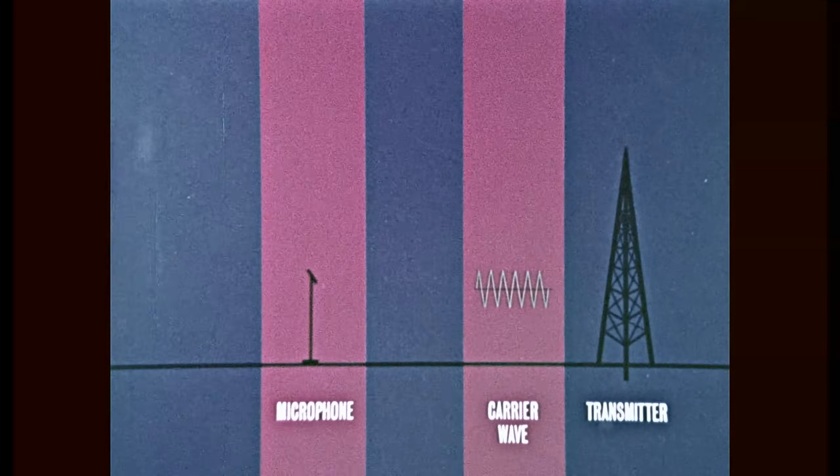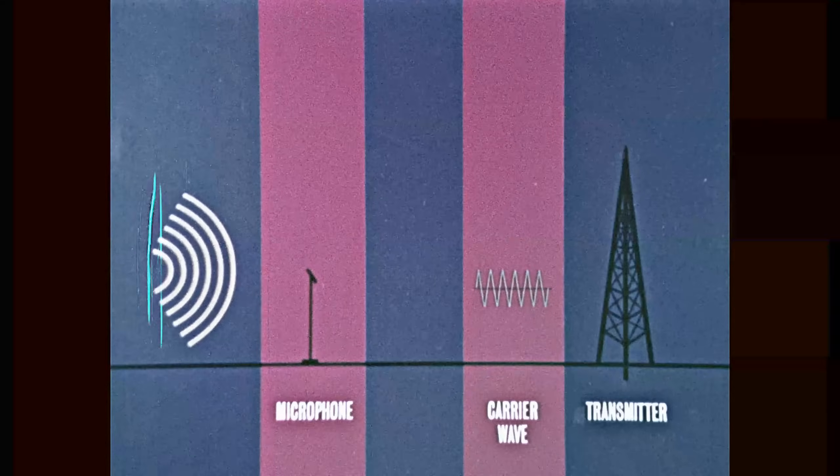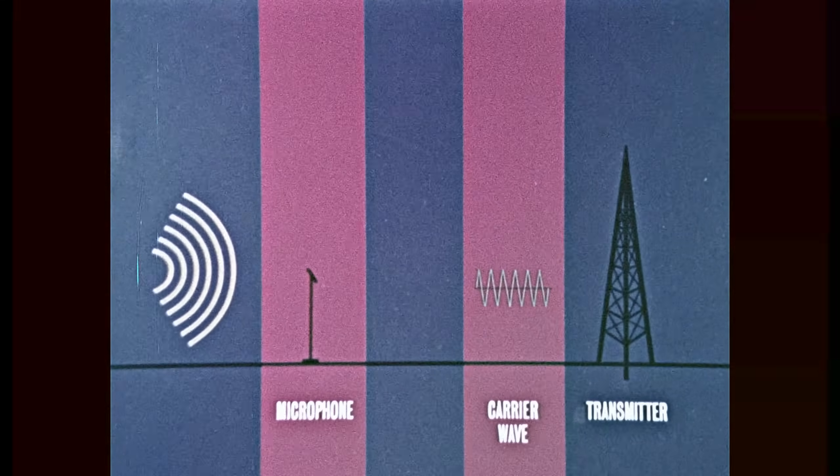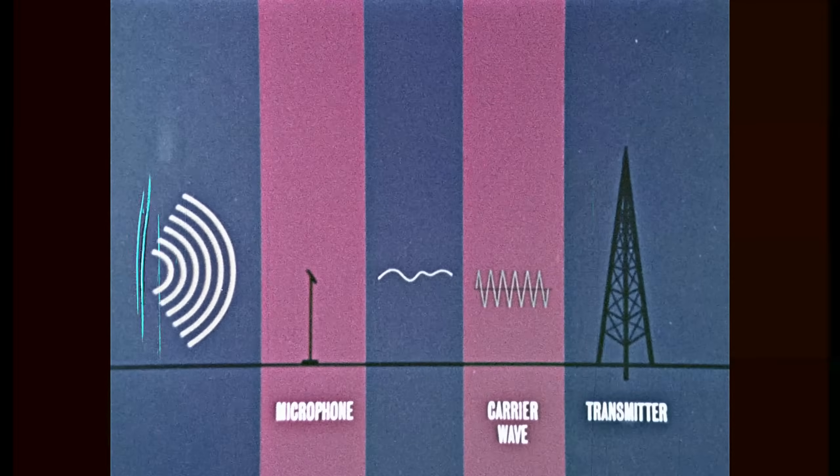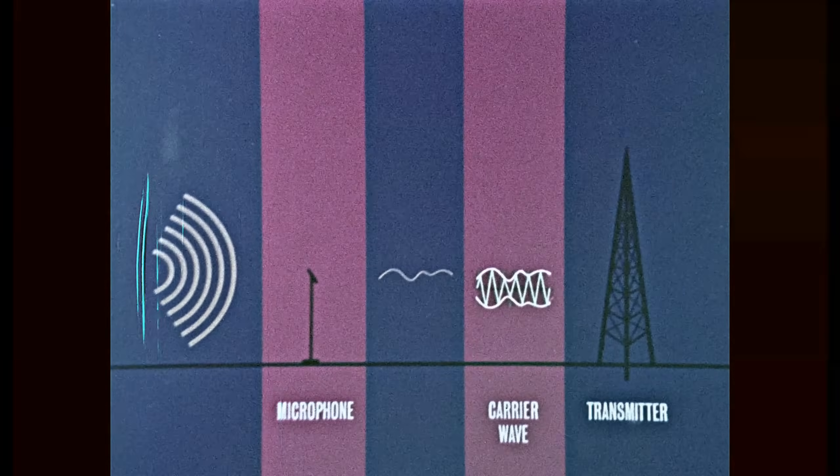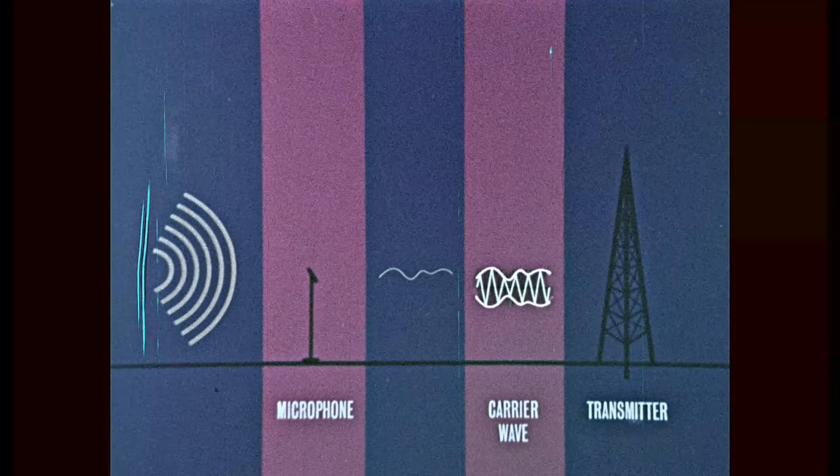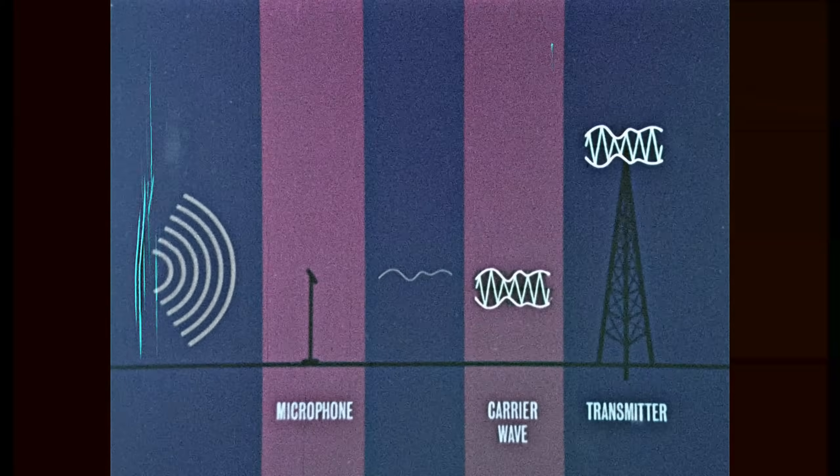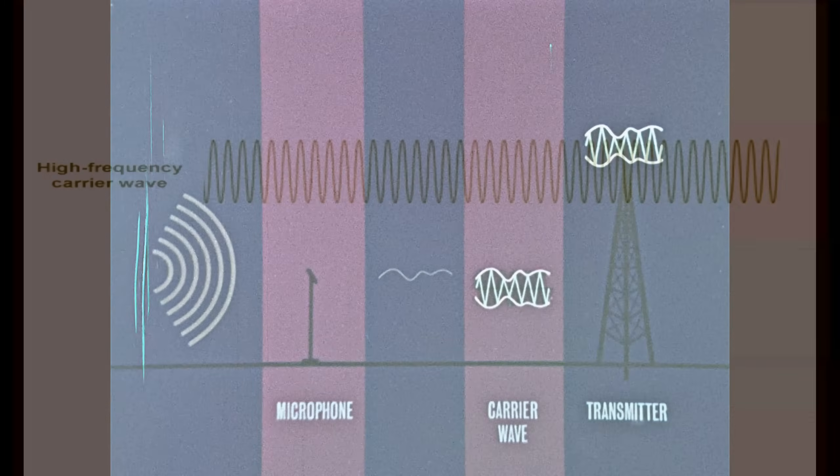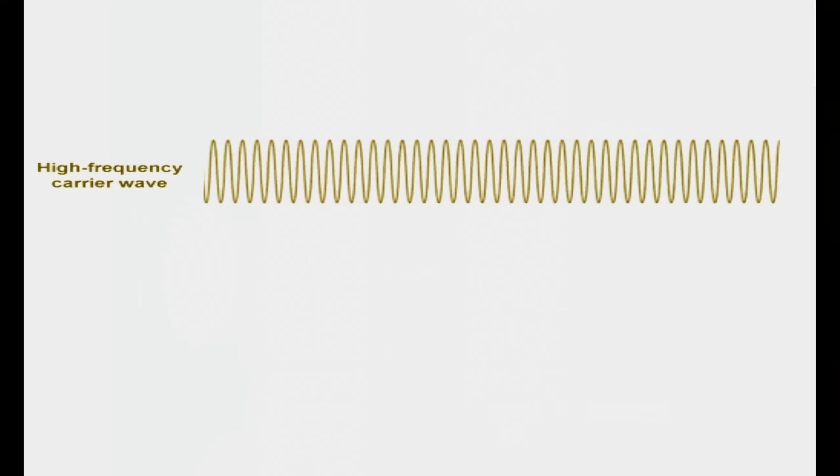At the broadcasting station, the audio waves are changed into a corresponding electronic signal. Then the carrier wave is modulated, varied in strength or amplitude, by the audio signal, before it's amplified and transmitted. The transmitter sends out a high-frequency carrier wave, which carries the variations of the audio signal.